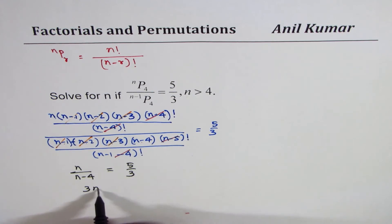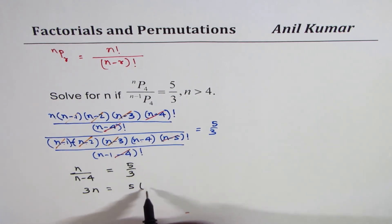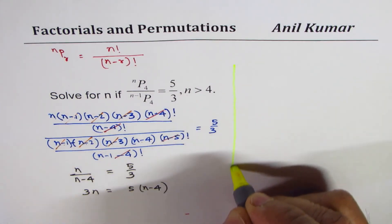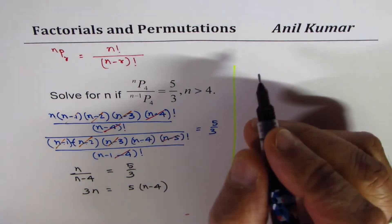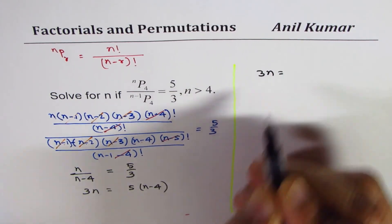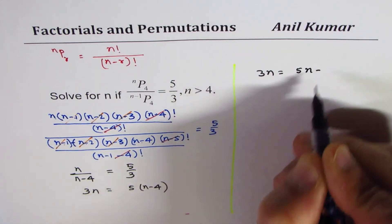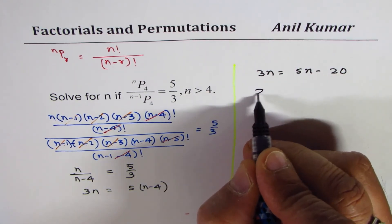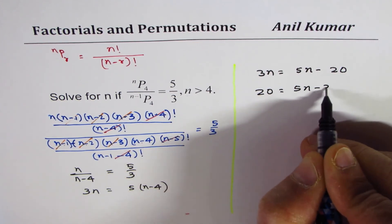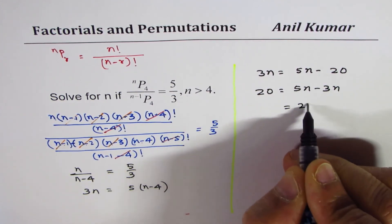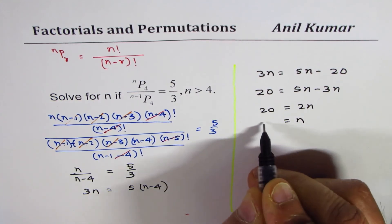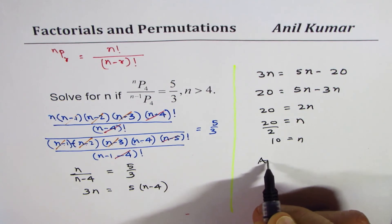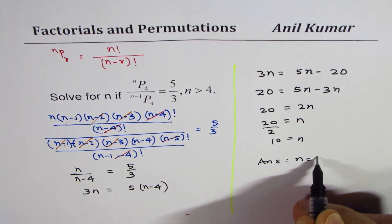Now we can cross multiply. We get 3n equals 5 times (n minus 4). Solving this: 3n equals 5n minus 20. Bringing terms together gives 5n minus 3n, which is 2n, equals 20, so n equals 20 divided by 2, giving us n equals 10. Our answer is n equals 10.